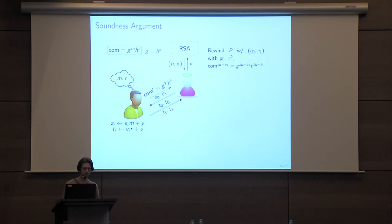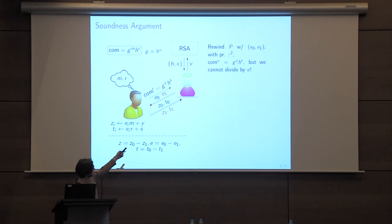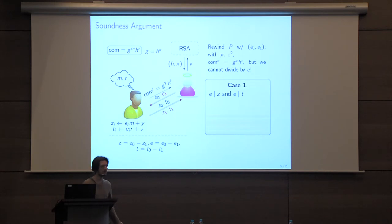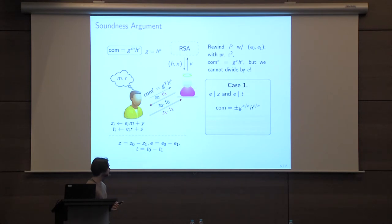We use rewinding again — the two flows are repeated twice. Renaming the differences as Z, E, and T, we have the relation: C^E = G^Z · H^T. But we cannot divide by E, so we cannot just compute Z/E and T/E to get a witness. We consider two cases. The first easy case: E divides Z and E divides T. Then we can divide over the integers and return a valid solution to the commitment — essentially using Z/E and T/E as a witness.